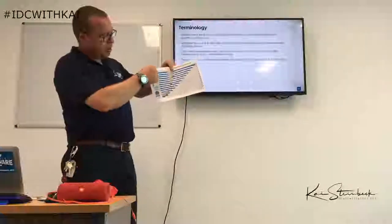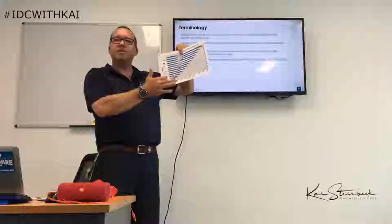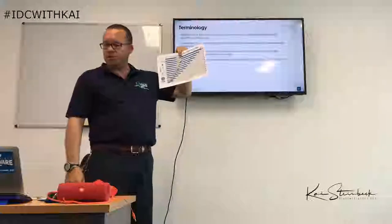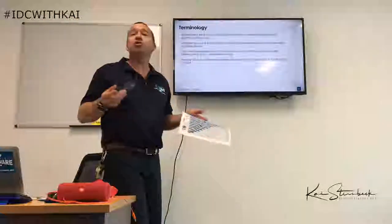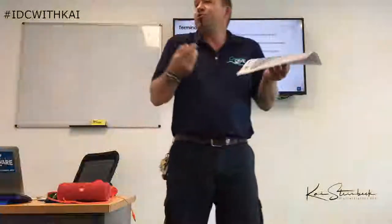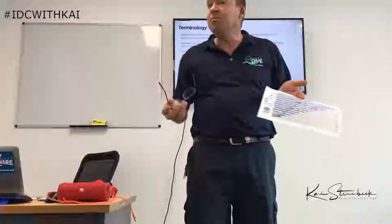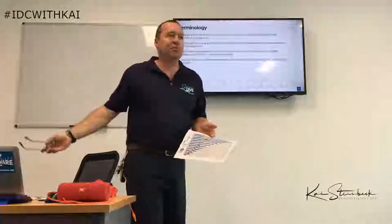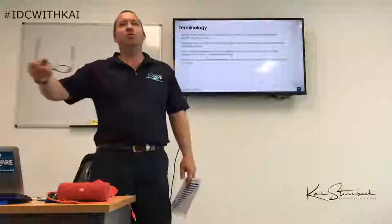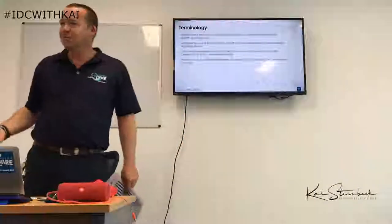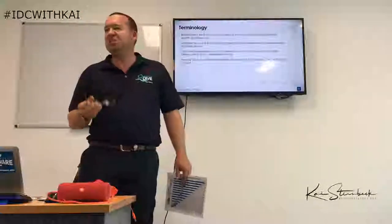A pressure group is represented by the alphabet on our tables — A through Z. The pressure group represents how much nitrogen is absorbed in my body: A means very little nitrogen, Z means an awful lot. Rather than saying I have 645 units of nitrogen, we simply use the letter, where A is very little and Z is an awful lot.